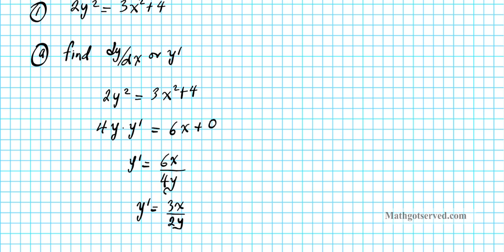Dividing the top and bottom by 2, we end up with y prime equal to 3x over 2y. There is your first answer. Now, how do we do this using the calculator?